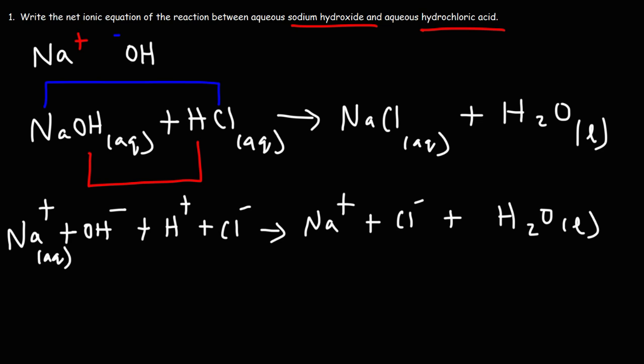Well, as the name implies, they spectate. They're spectators. They watch the reaction, but they don't participate in the reaction. And what we need to do here is we need to eliminate the spectator ions. And to identify them, they will appear exactly the same on both sides of the chemical reaction.